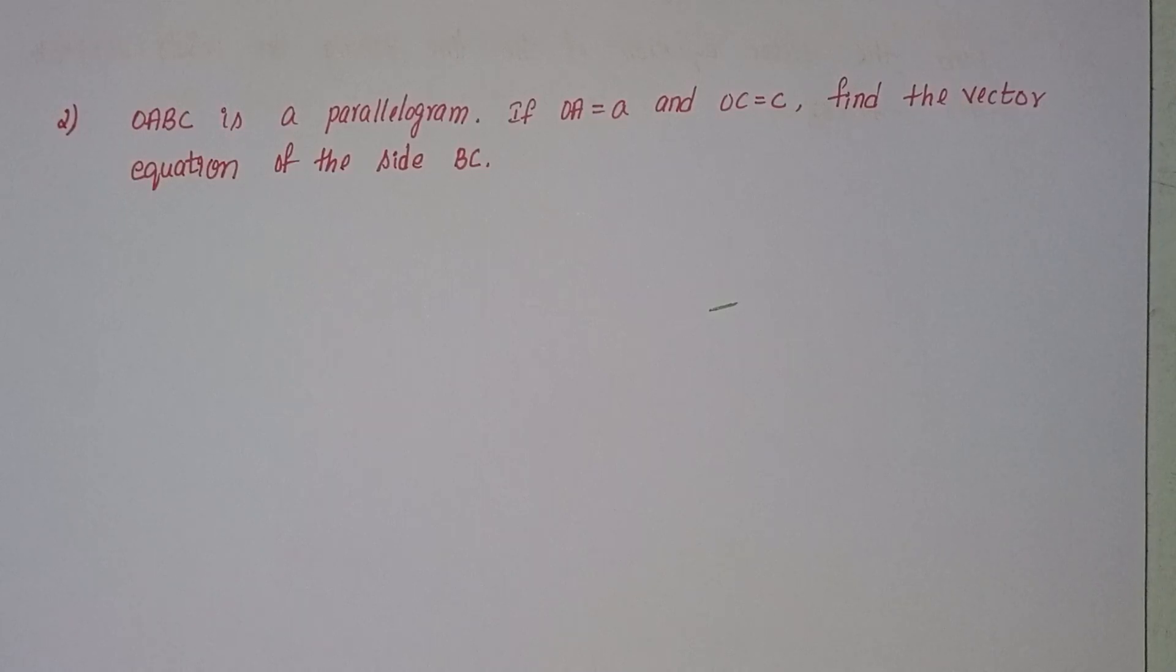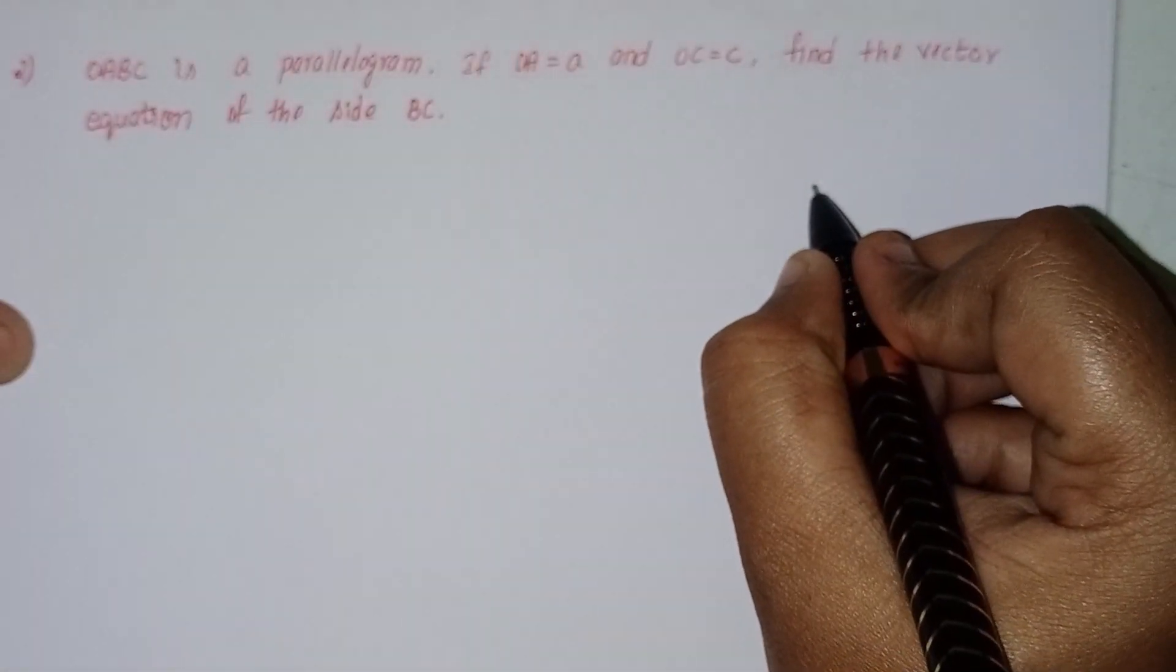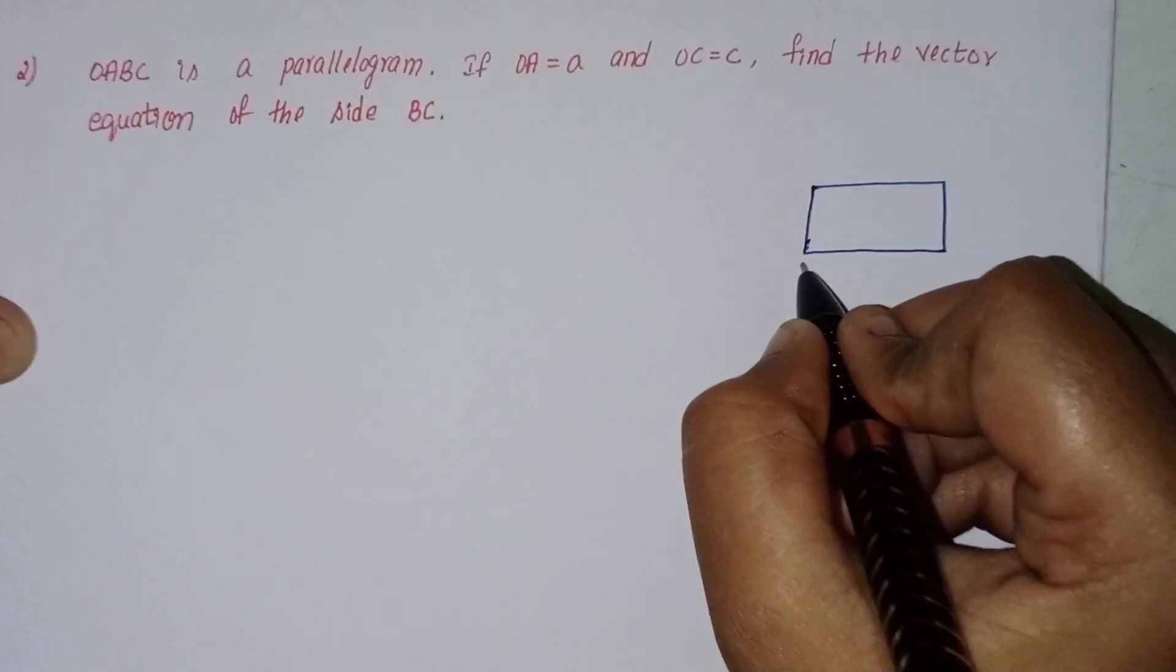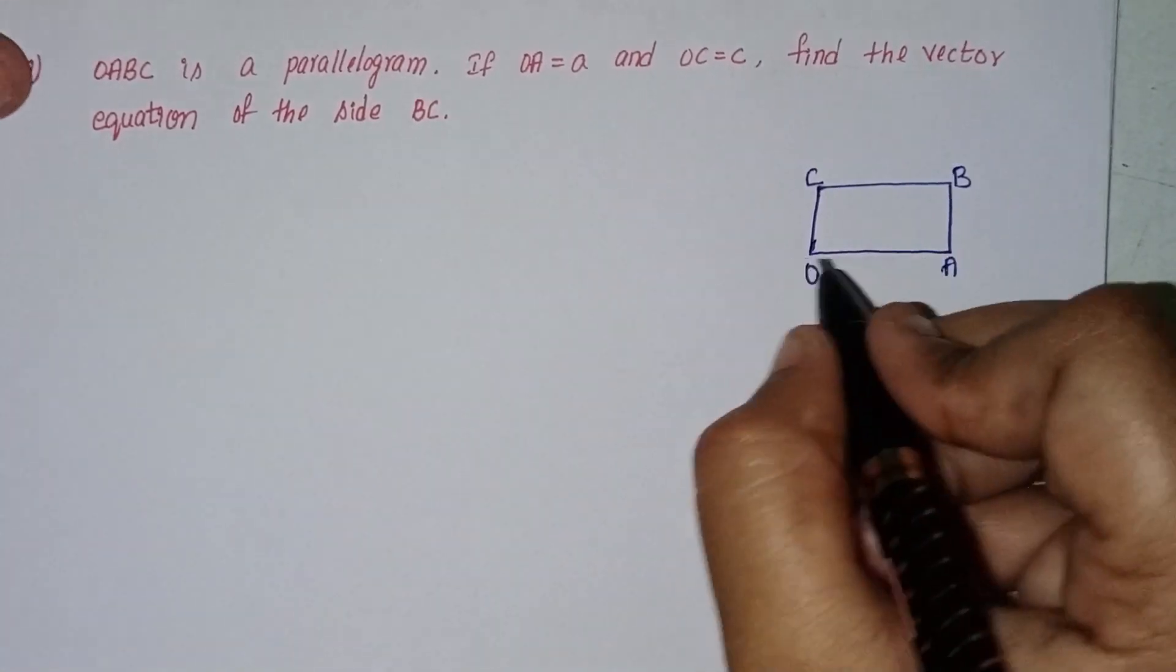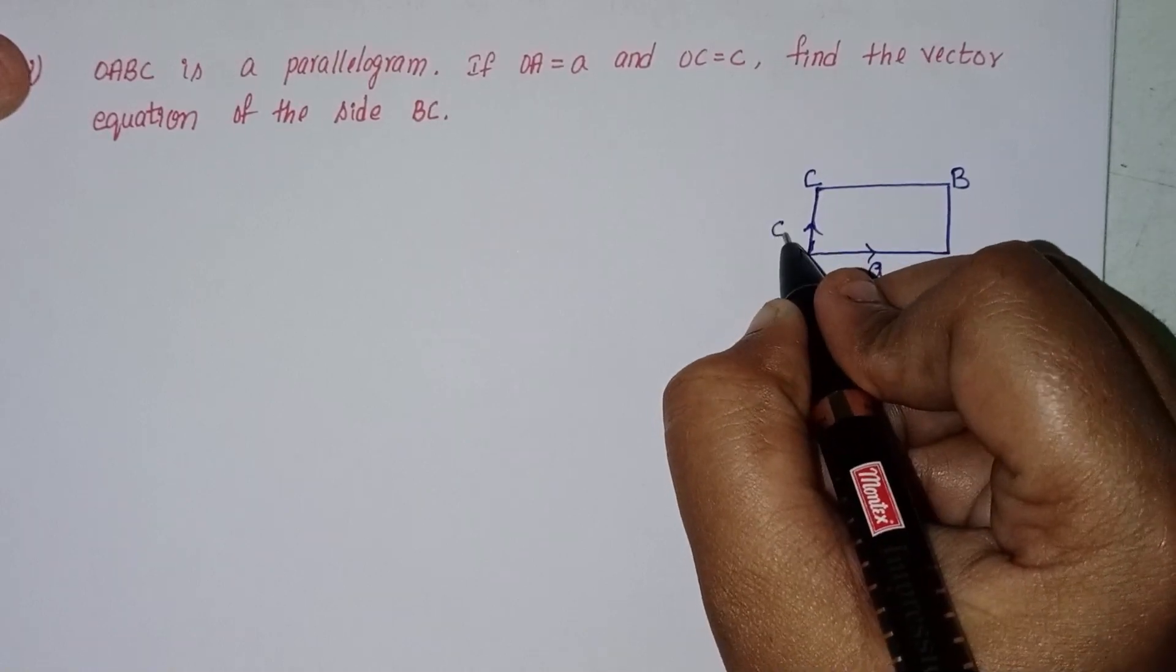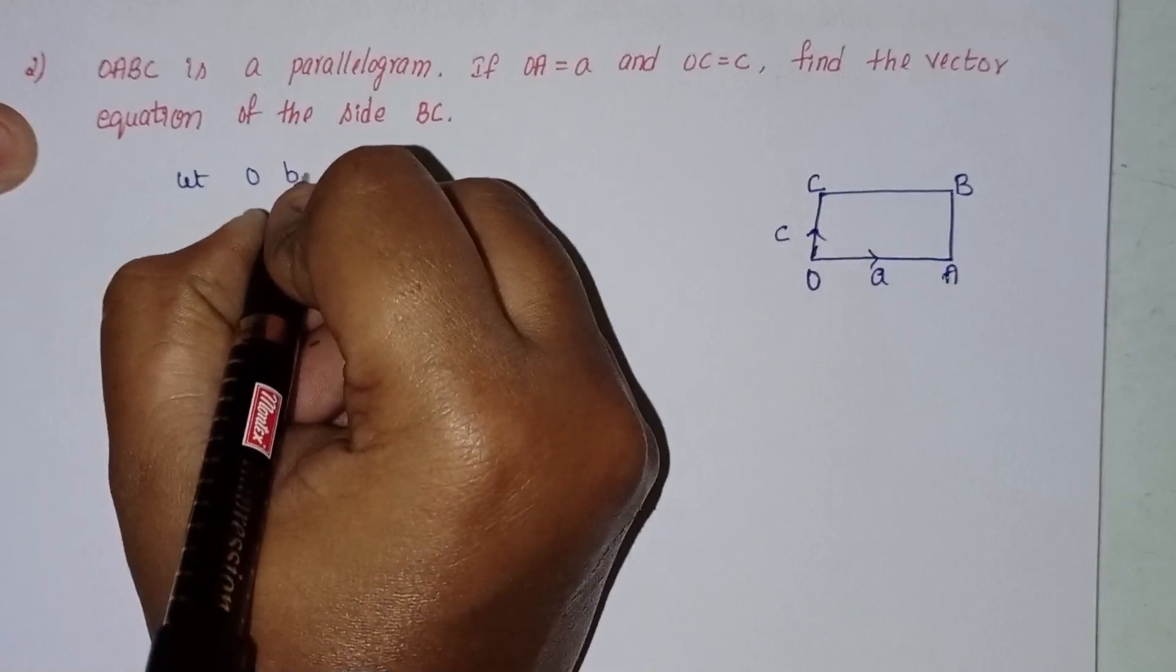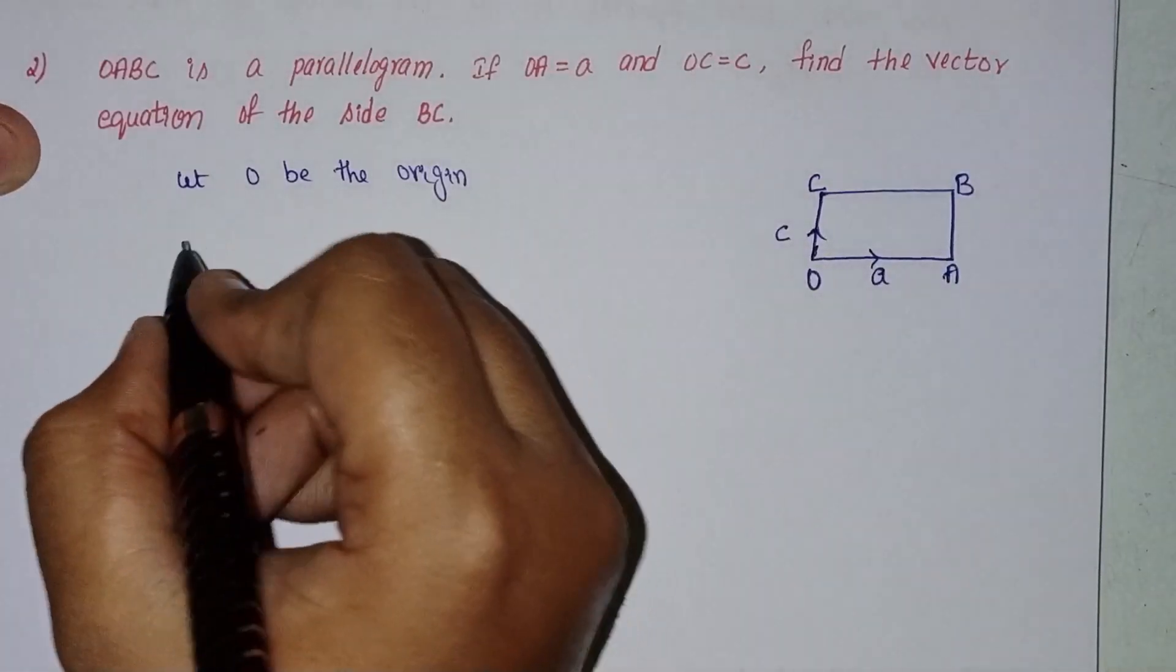vector equation of the side BC. Let O be the origin. Given OA equals a and OC equals c.